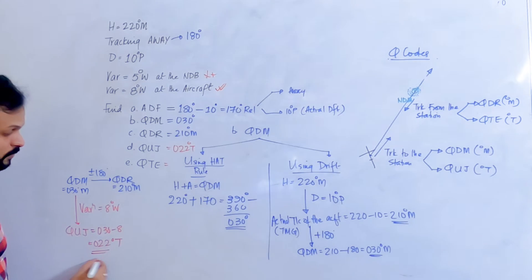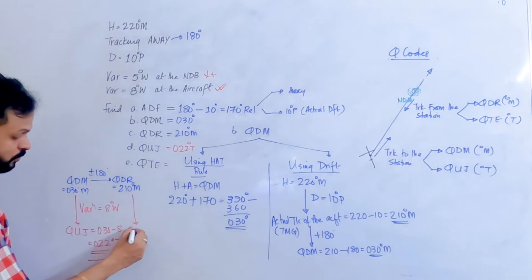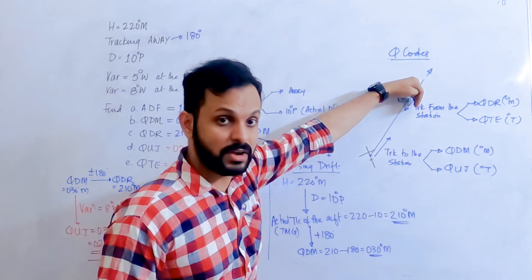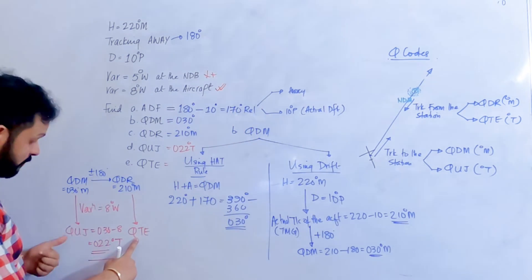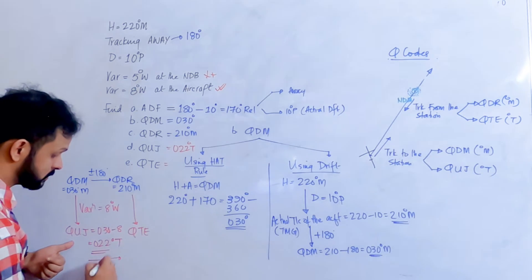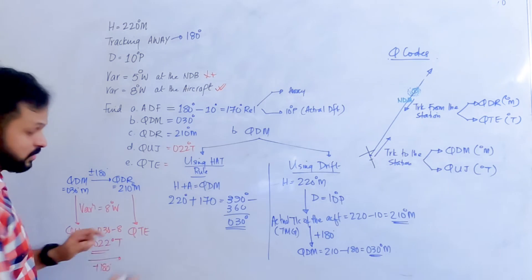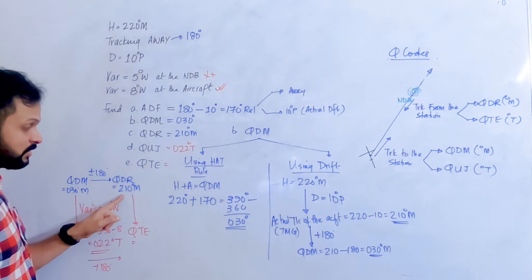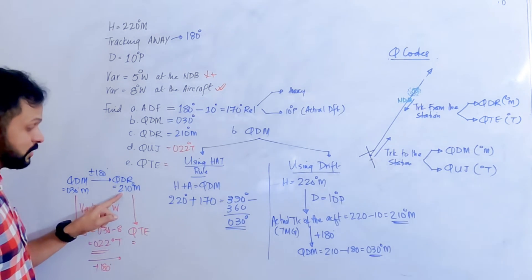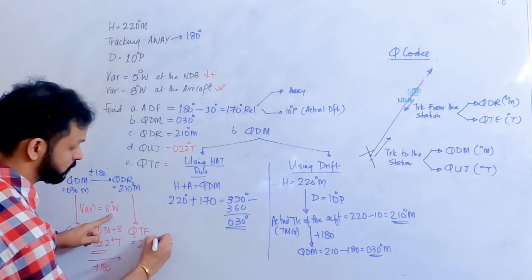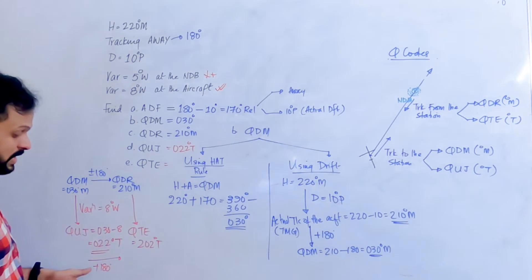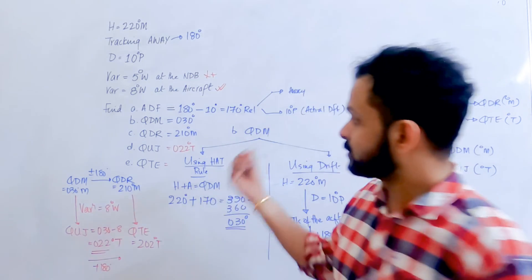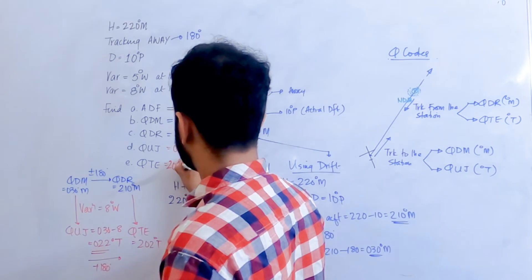Once you have QUJ, find QT — the true track from the station. You can apply 180 degrees to QUJ: 022 plus 180 equals 202 degrees. Or apply the same 8 degrees west variation to QDR: 210 minus 8 equals 202 degrees. Either way, QT is 202 degrees true.